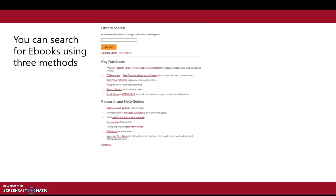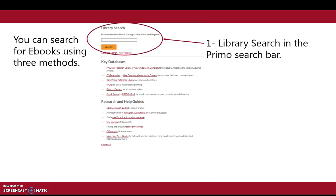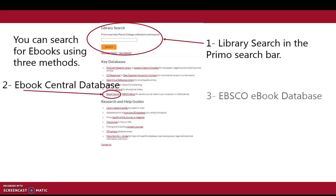You can use three methods to search for ebooks. The first is in the Primo search bar. The next is in the Ebook Central database. The third is in the EBSCO ebook database.